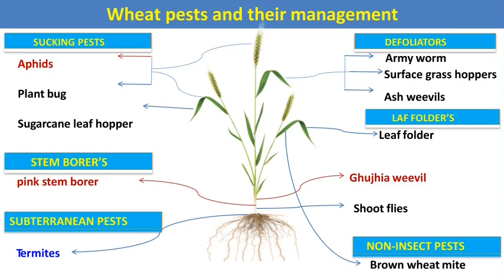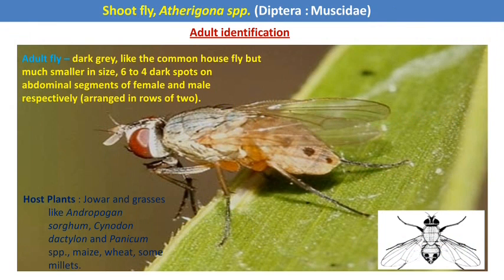The first pest is the shoot fly, which belongs to the order Diptera. Diptera is a higher order with complete metamorphosis, meaning four different life stages: egg, larva, pupa, and adult. In the case of Diptera pests, the larval stage is called maggots. The maggots are the damaging stage which attack the wheat crop.